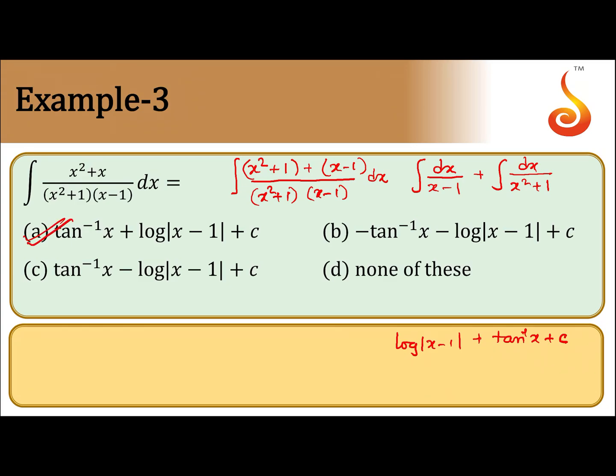So option a is correct. You don't have to see the partial fractions. Simple rearrangement of the numerator gives you an idea, because x square plus 1 is there, x minus 1 is there.